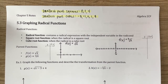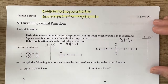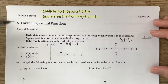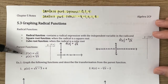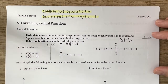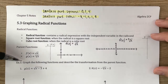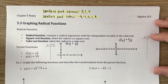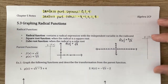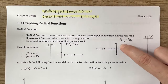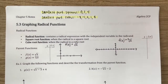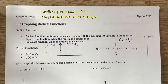We're going to focus on graphing square roots and cube roots, so we'll start with the parent functions. The parent function for a square root is f(x) equals the square root of x, and the parent function for a cube root is g(x) equals the cube root of x. It's pretty interchangeable.